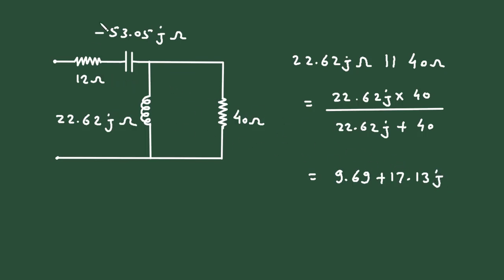Now here, these are in series with these two. So it will be added. Here we can write, Z is equal to 12 ohm plus minus 53.05 j. Then these two are parallel and its equivalent impedance is this much. So plus this much.